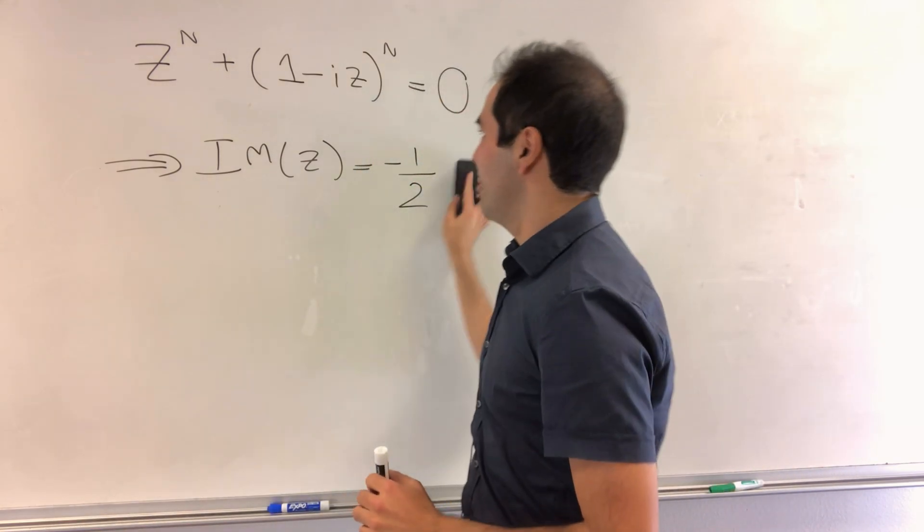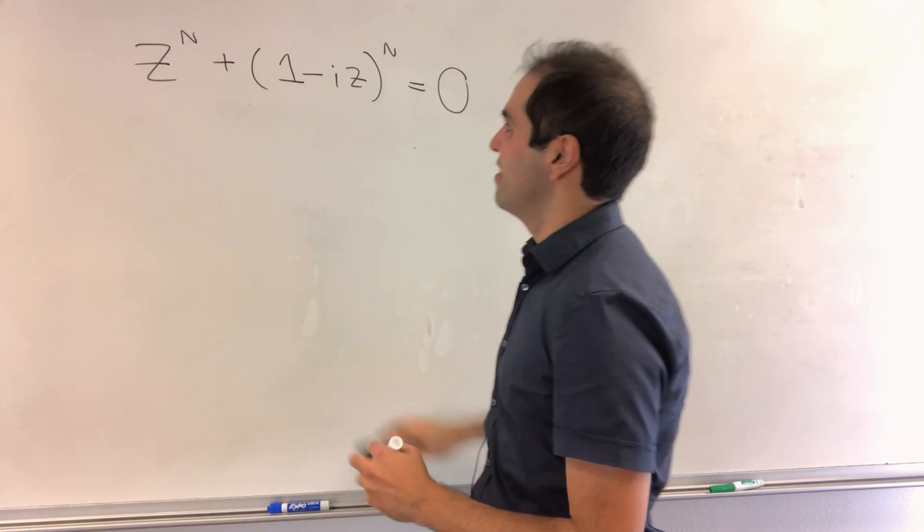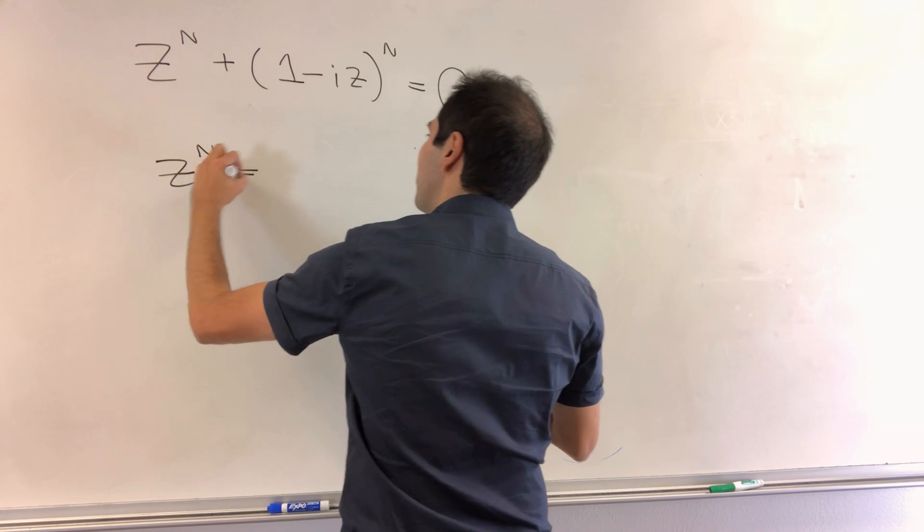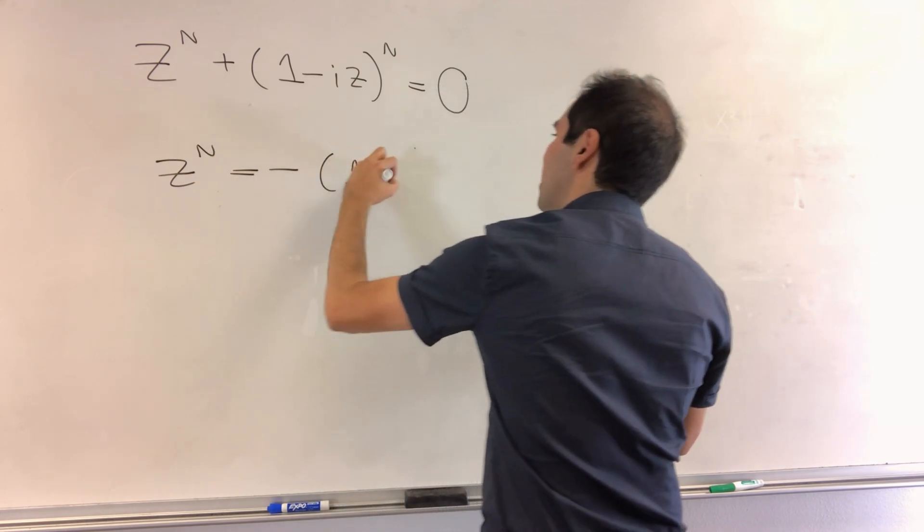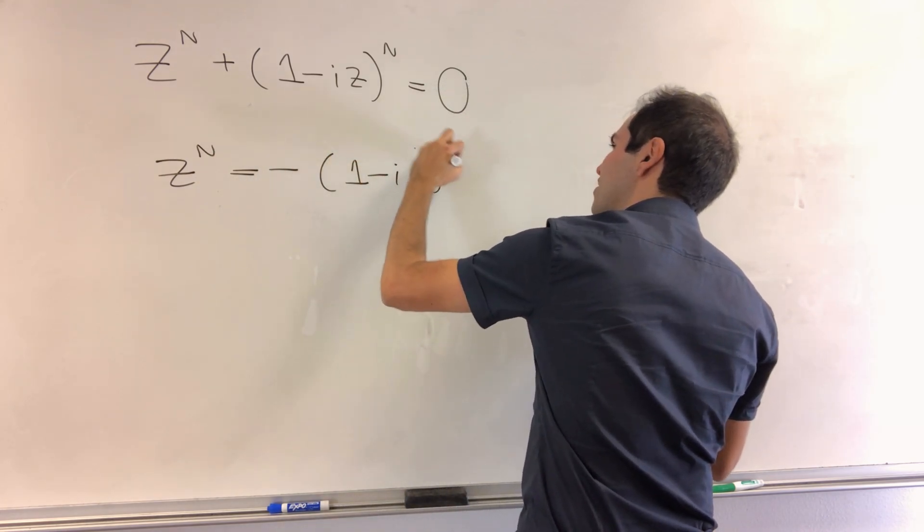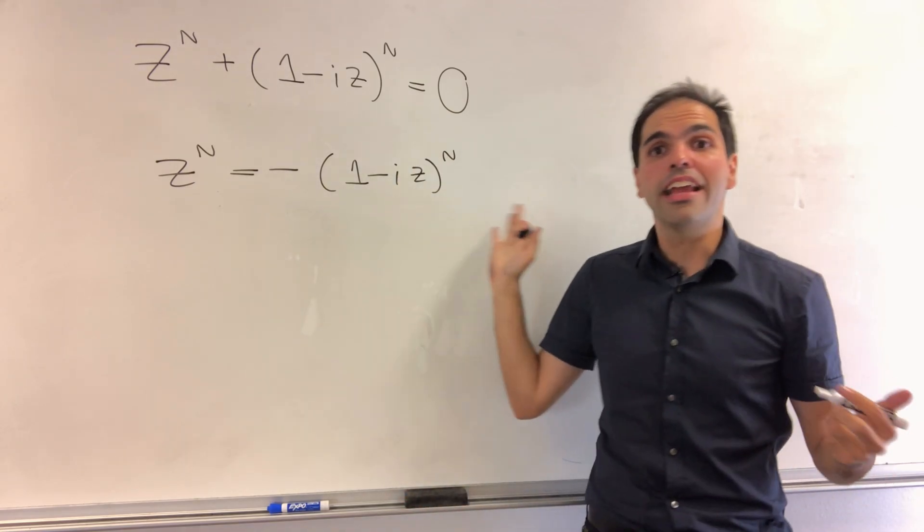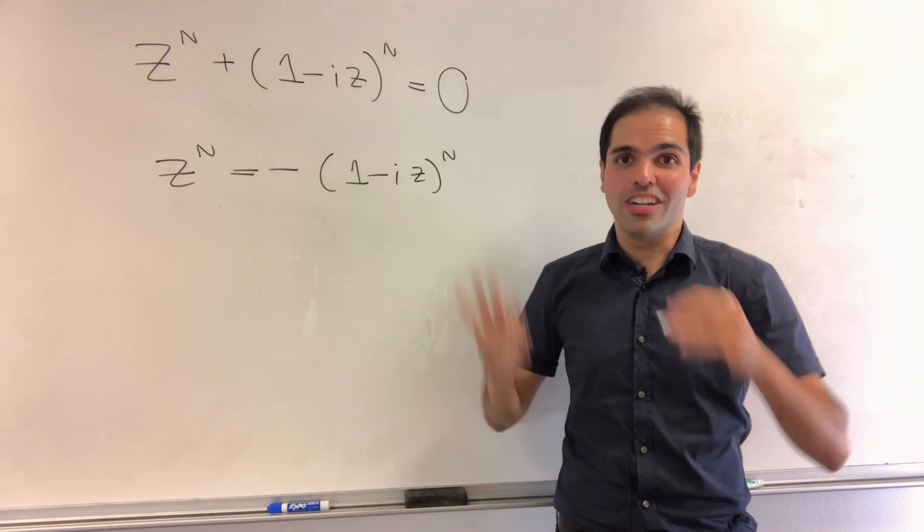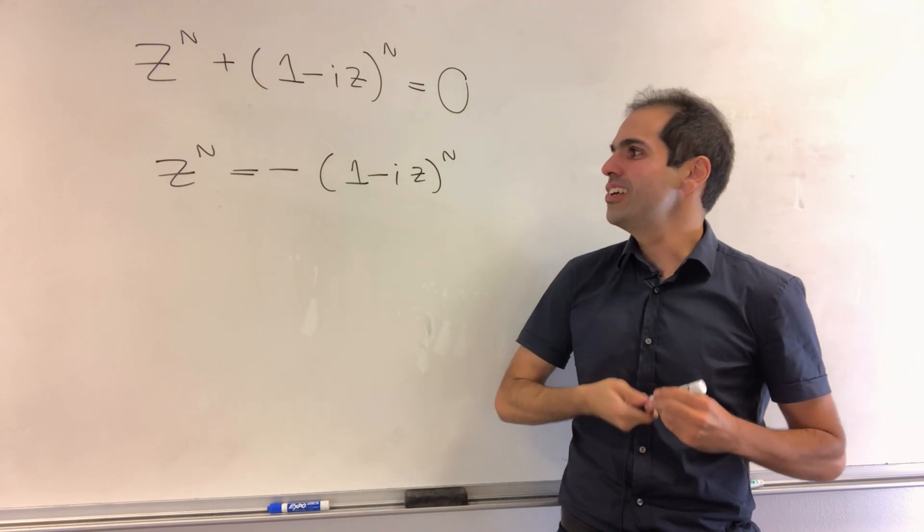So what do you do to this equation? So the first step I actually had correct, I said, well, let's write z to the n equals minus 1 minus iz to the n. Now you're tempted to take nth roots, but beware of branch cuts. So this is actually not the way to do it.